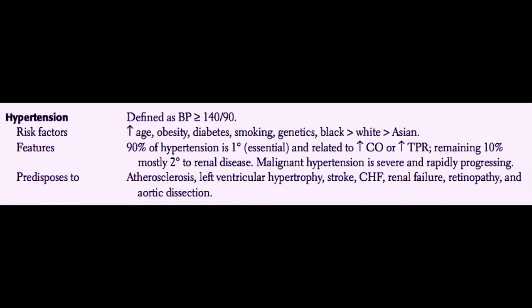Patients with malignant hypertension may develop rapidly progressing hypertension with severe end organ damage. Hypertension predisposes to atherosclerosis because of increased turbulence at the level of the endothelial cell, as well as left ventricular hypertrophy, stroke, heart failure, renal failure, retinopathy, and aortic dissection. All of these complications are referred to as end organ damage, and are the reason that we try to control patients' blood pressure as well as we can.